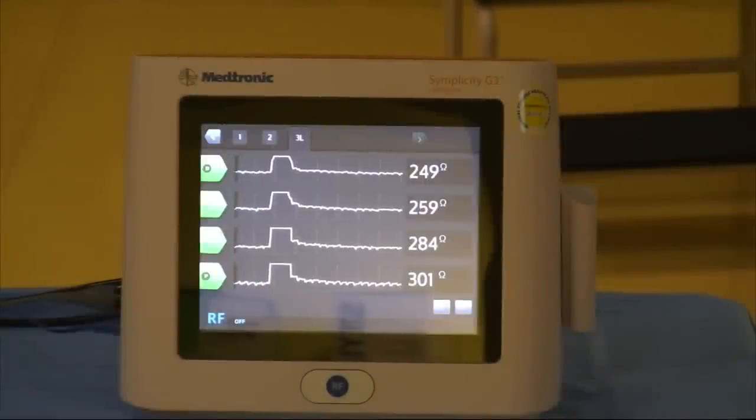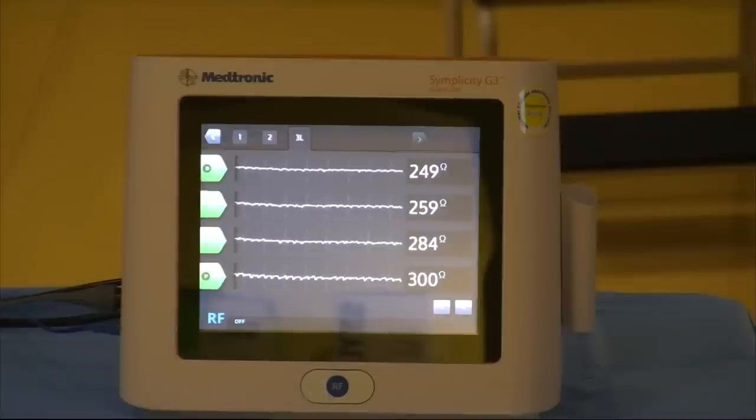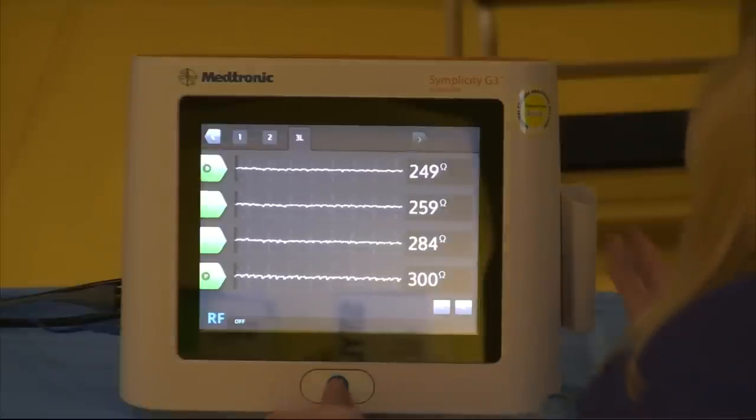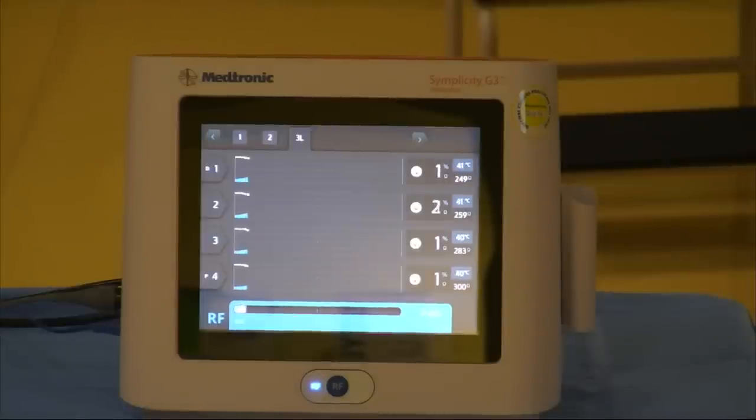Yeah, from 249 for the most distal to 301 for the most proximal. And they all look nice and stable. So, we'll kick off there and we'll start our ablation. I'm just going to hold the catheter as I always do, just in case the patient becomes agitated. This gentleman, as he said, everyone varies hugely. He's had the same regime and he's fast asleep and snoring and felt absolutely nothing from the first series of ablations.